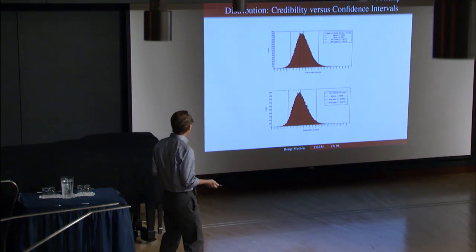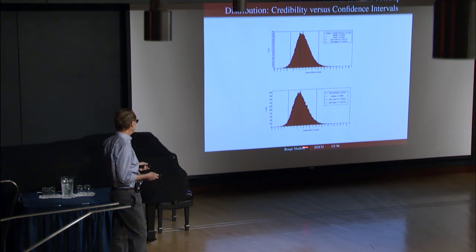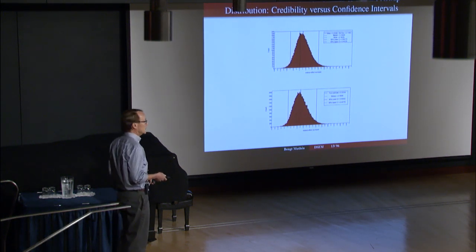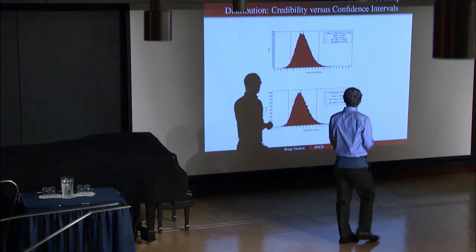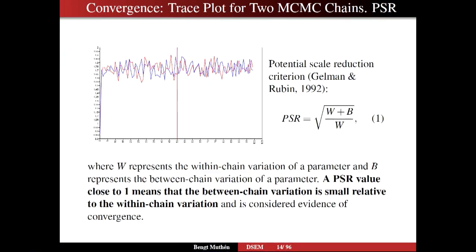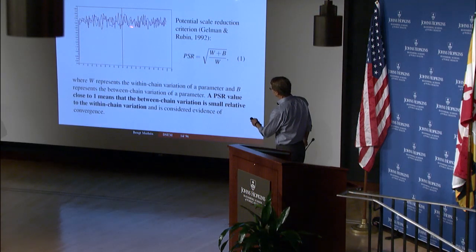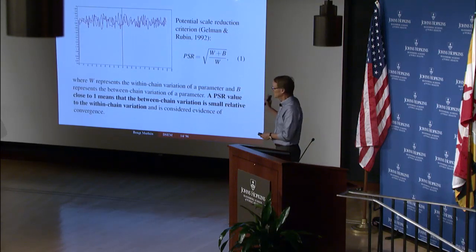Convergence — here's how you look at that. You look at the trace plot, in this case using the default of two chains going forward in parallel from different starting points. One is red and one is blue. Here's the cutoff where we throw away these initial draws — that's the burn-in period. We use only those parameter value points to form the posterior distribution by tilting our head to the left.